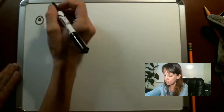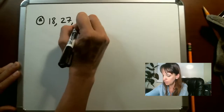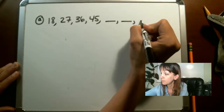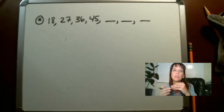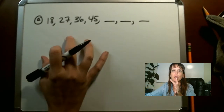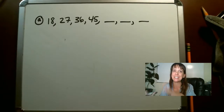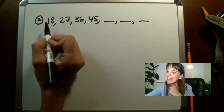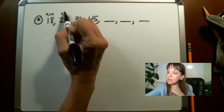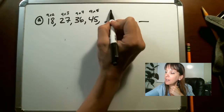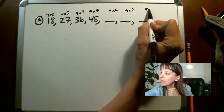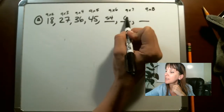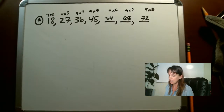Let's go back to those practice problems on page 45. Practice problems A, B, and C. For A, we've got twenty-seven, thirty-six, forty-five. Know your multiplication tables, because immediately you can identify those are all multiples of nine: nine times two, nine times three, nine times four, nine times five. So the next three are nine times six is fifty-four, nine times seven is sixty-three, nine times eight is seventy-two.